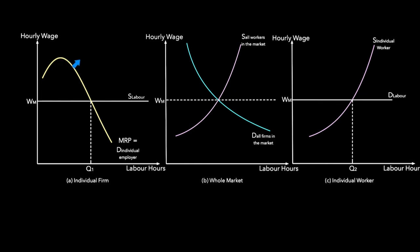On the other hand, the demand for labor is simply MRP, which is MP times P as discussed earlier. The demand for labor is downward sloping because in a perfectly competitive market, MP is downward sloping. Where demand meets supply we get the profit-maximizing level of employment. This is the point where MC equals MRP. Before Q1, MRP is greater than MC, meaning the revenue from each additional worker exceeds the cost, so marginal profit is positive and we keep hiring more workers.